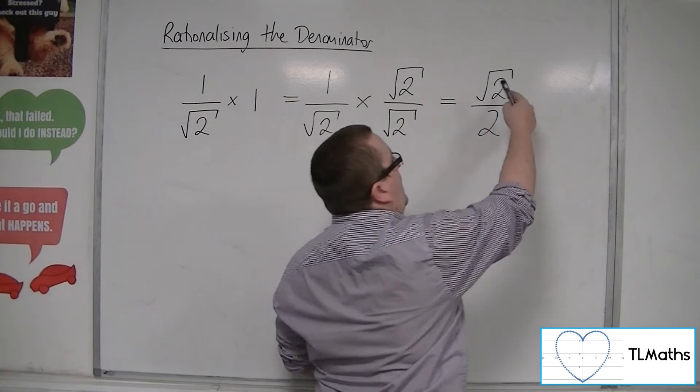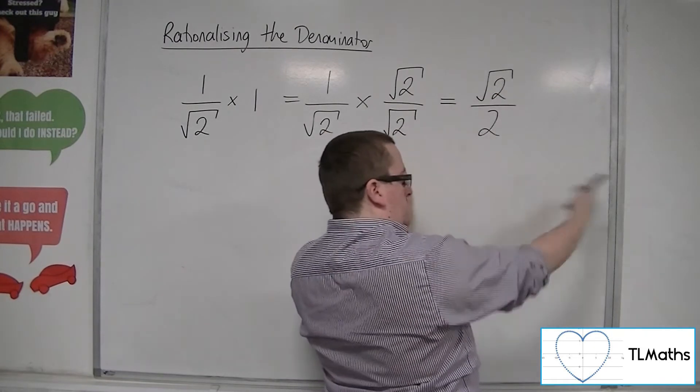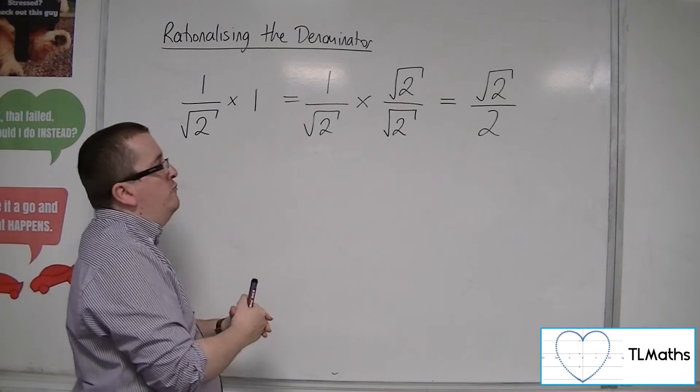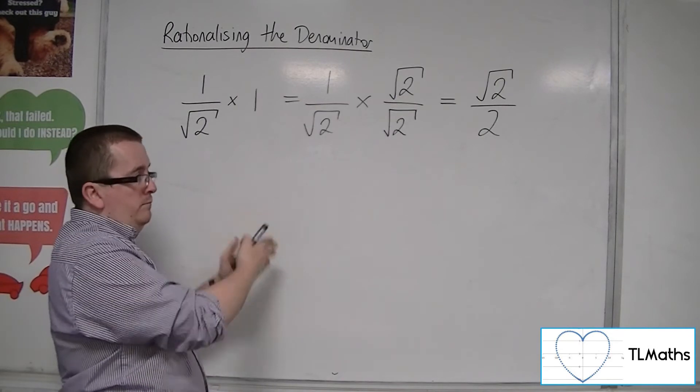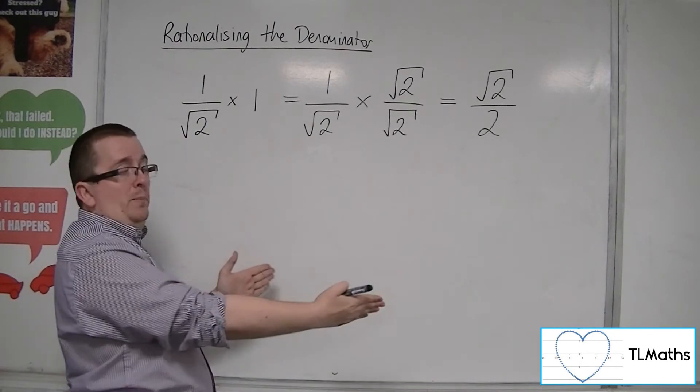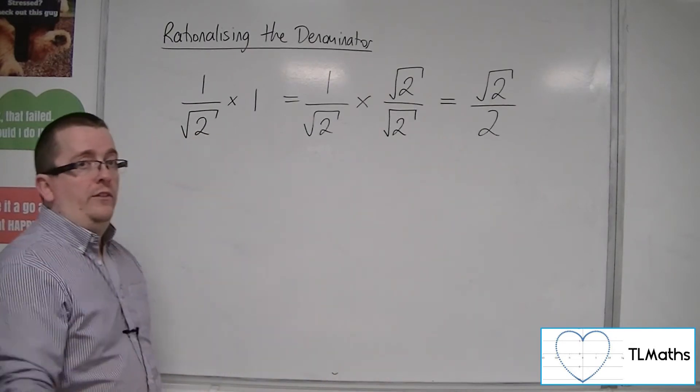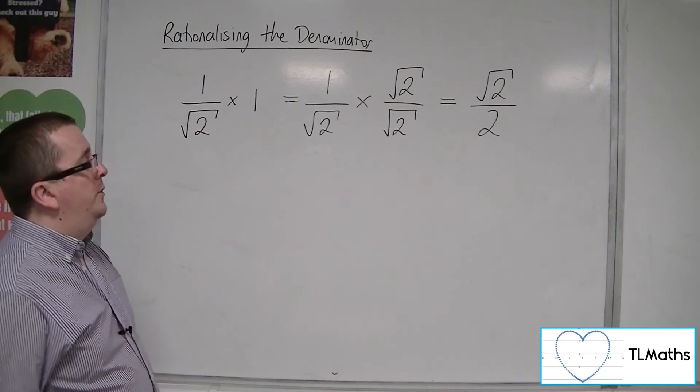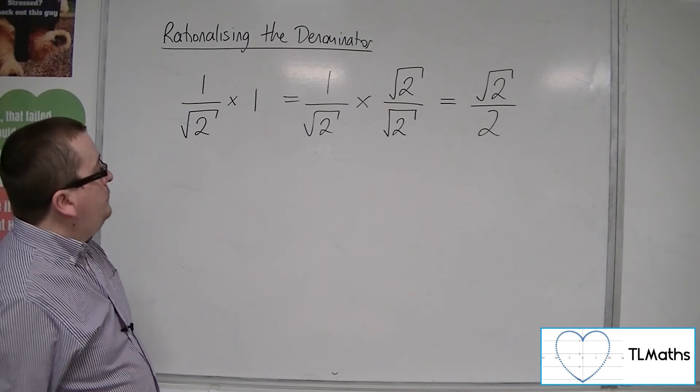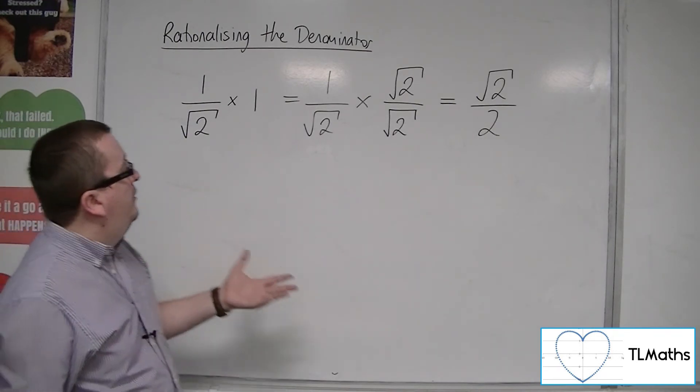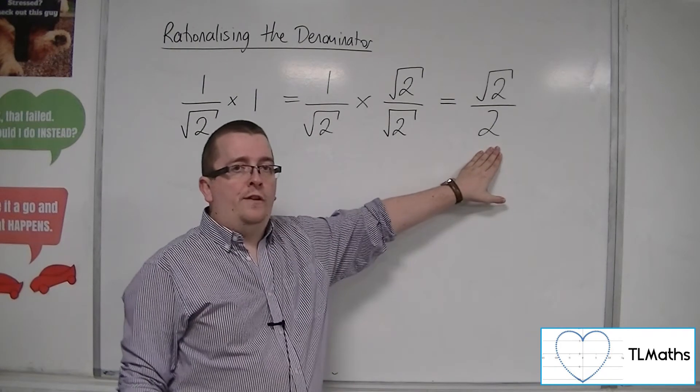If you've got that 8 decimal version of root 2 on your calculator display, dividing it by 2, that's a lot easier and a lot quicker to do. So they both give you the same result, but this one is clearly a lot faster.